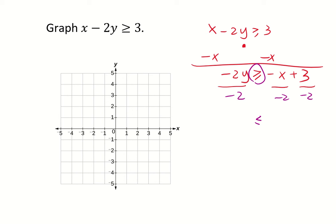Anyway we'll have y is less than or equal to positive 1/2 x minus 3/2. So notice that these two inequalities are equivalent. So we will graph this one instead because it's easier to graph because y is by itself.